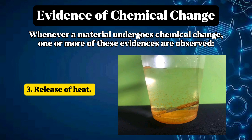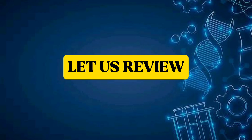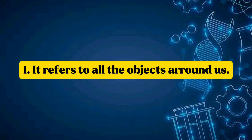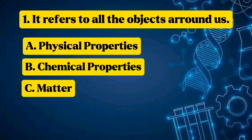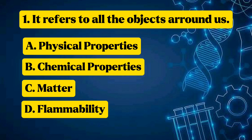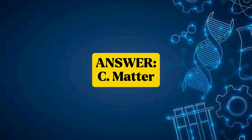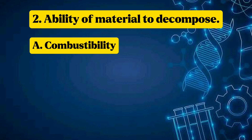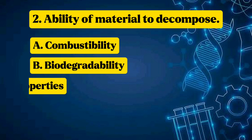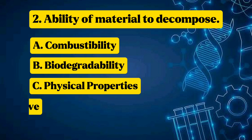Review — Question 1: It refers to all the objects around us. Answer: C — Matter. Question 2: Ability of a material to decompose. Answer: B — Biodegradability.